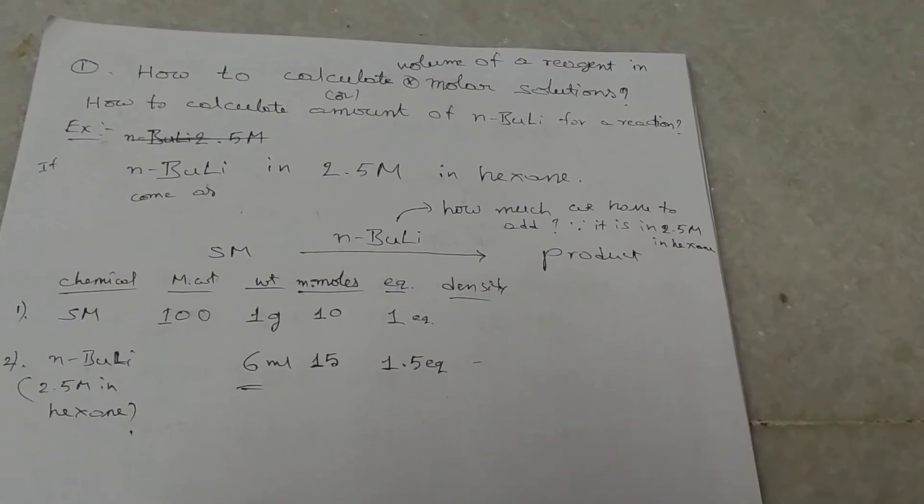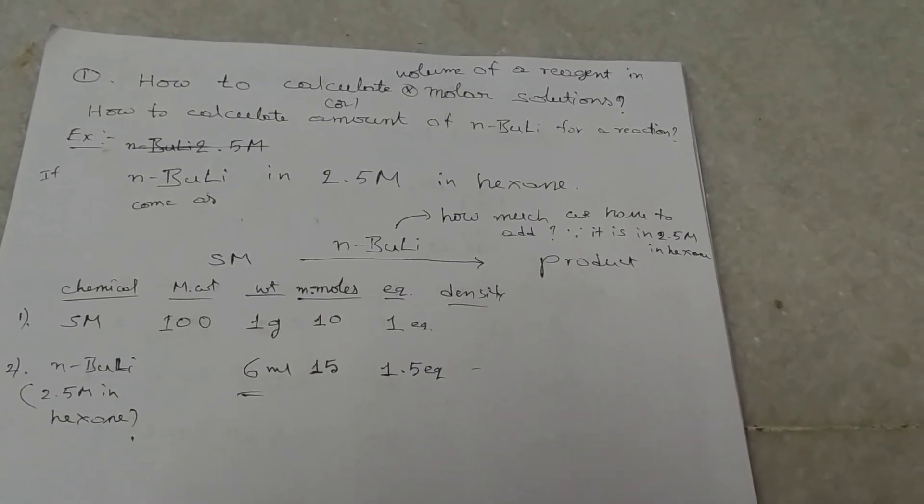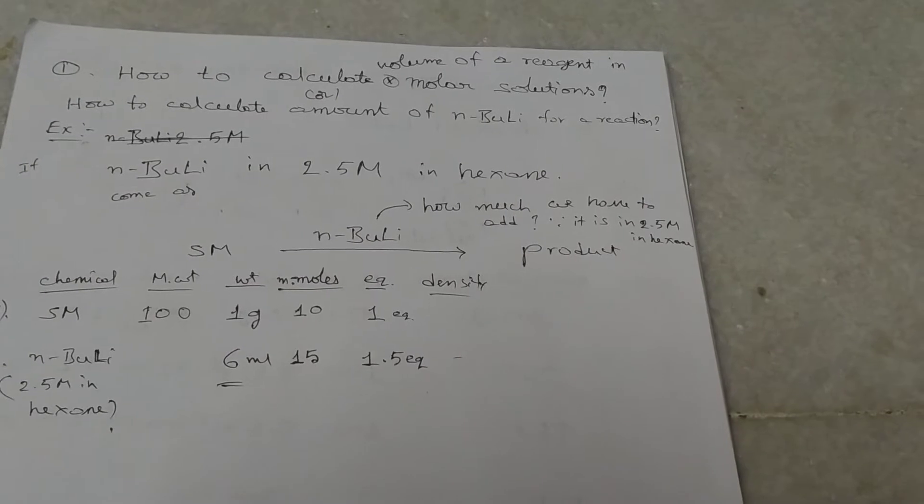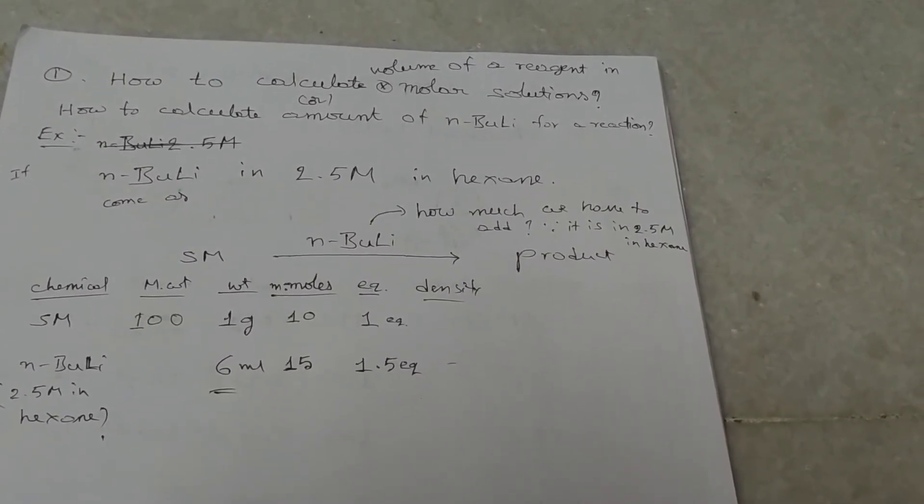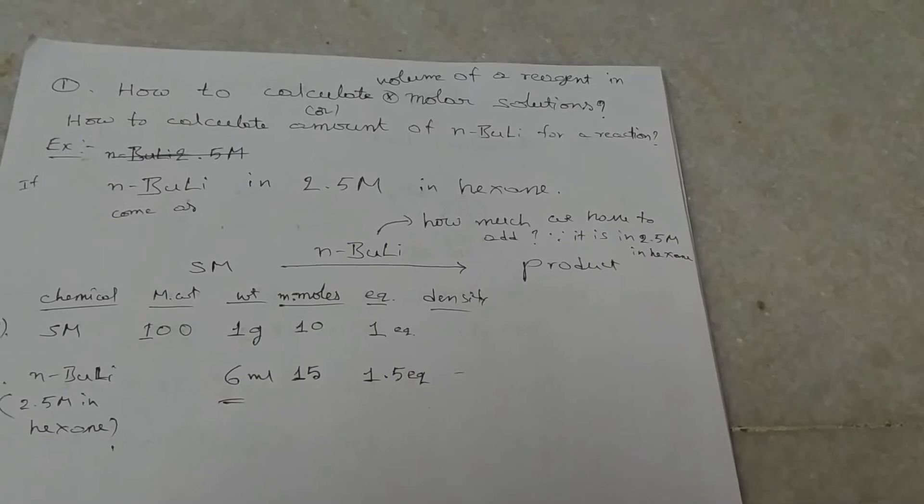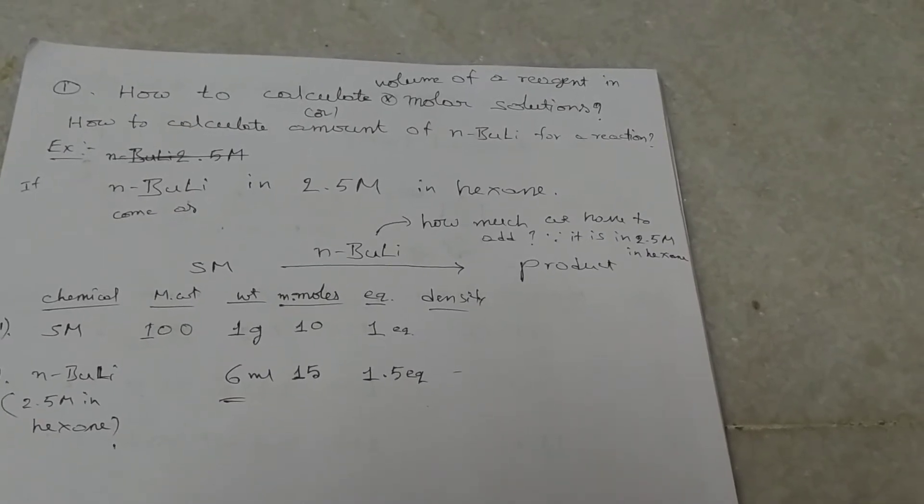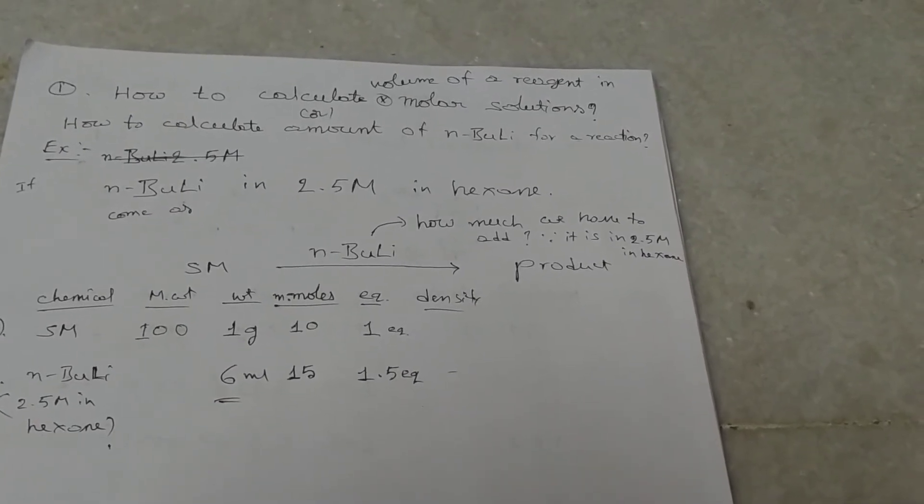If suppose our starting material is 100, then we have to calculate. We have taken, kept the reaction in 1 gram scale. Then we know how to calculate the millimoles.